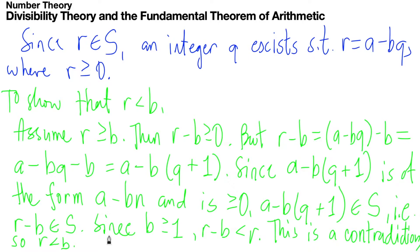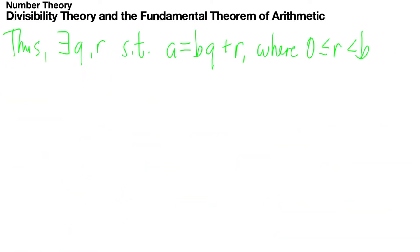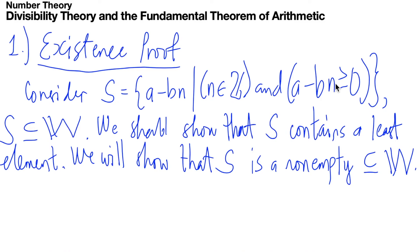Therefore, we have shown that there exist Q and R such that A equals BQ plus R, where R is strictly less than B and R is greater than or equal to 0. So that completes our run-through of the existence proof.